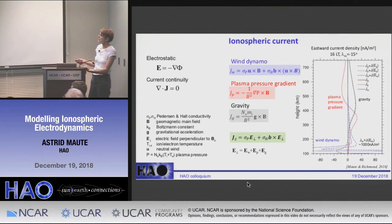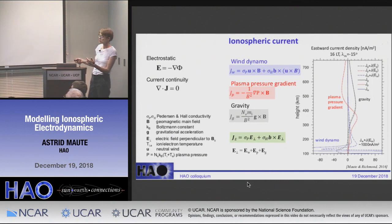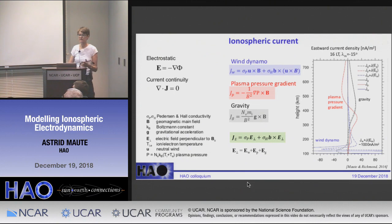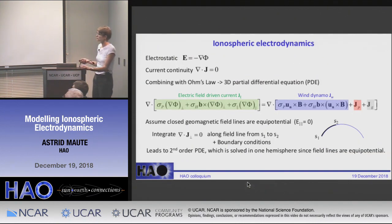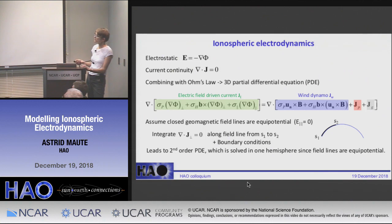The gravity-driven current is eastward since gravity is downward and the magnetic field is northward, and this has to close somewhere. During nighttime the conductivities are low, so it closes through the dayside E region. Electric fields need to be set up — and that's basically what ionospheric electrodynamics does. It's electrostatic; the current is divergence-free. We combine this with Ohm's law: the divergence of the electric-field-driven current is balanced by the source term — the wind-dynamo-driven current plus plasma pressure gradient and gravity-driven currents.